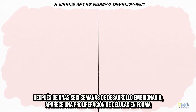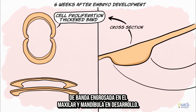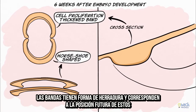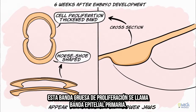After about six weeks of development of the embryo, a proliferation of cells in the form of a thickened band appears in the presumptive or developing upper and lower jaws. The bands are horseshoe shaped and correspond to the position of the future upper and lower jaws. This thick band of proliferation is called the primary epithelial band.